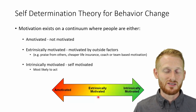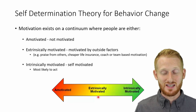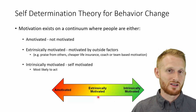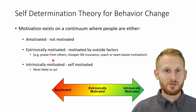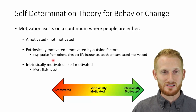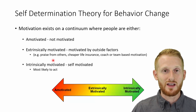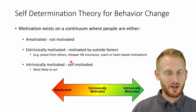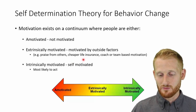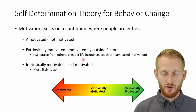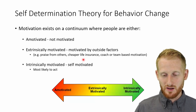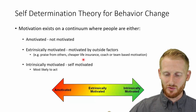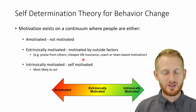Typically somebody who is intrinsically motivated will change faster and with more success than somebody who is extrinsically motivated. Someone amotivated is probably not going to change at all. Other forms of extrinsic motivation include praise from others, wanting to improve health scores like blood pressure or cholesterol for things like cheaper life insurance, or a coach or teammate telling an athlete to work harder. Something outside of their own psychology is making them want to change.